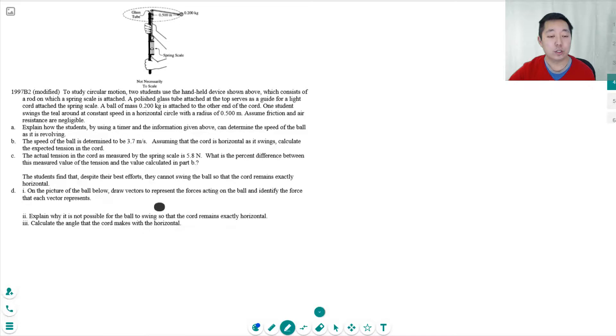So to study circular motion, two students use a handheld device which consists of a rod on which a spring scale is attached. A polished glass tube attached to the top serves as a guide for a light cord attached to the spring scale. A ball of mass two kilograms will latch to the other end of the cord. One student swings the ball around at a constant speed in a horizontal circle with radius 0.5 meters. Assume friction and air resistance are negligible. Explain how the students by using a timer in this information given can determine the speed of the ball that is revolving.